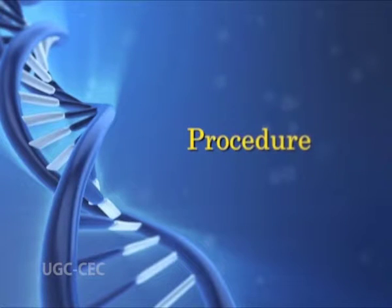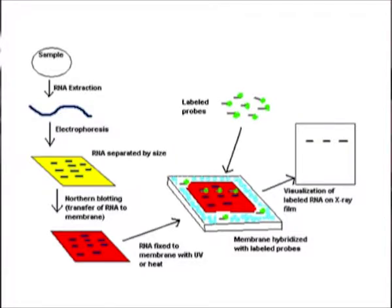Northern blotting is frequently used in studies of gene expression — for example, to determine whether specific mRNAs are present in different types of cells. In this technique, an RNA sample, often the total cellular RNA, is denatured by treatment with an agent such as formaldehyde, which prevents hydrogen bonding between base pairs, ensuring that all RNA molecules have an unfolded linear conformation.